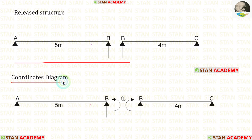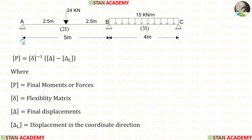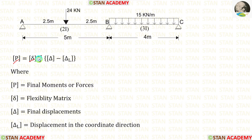Now let us make the coordinates diagram. In this analysis, there is only one coordinate, located at point B, because from point B we have removed MB. The formula to find MB is: P matrix equals delta matrix inverse multiplied by the quantity delta bar matrix minus delta L matrix. Since there is only one coordinate, each of these matrices contains only one value.